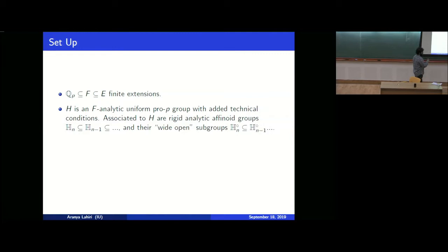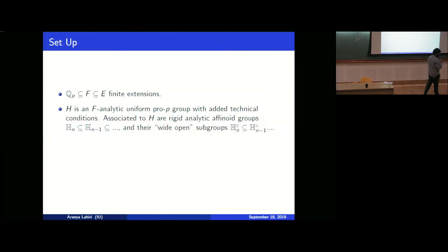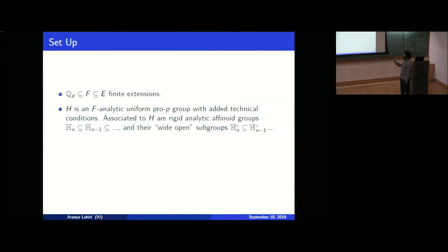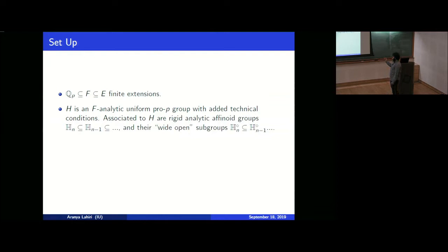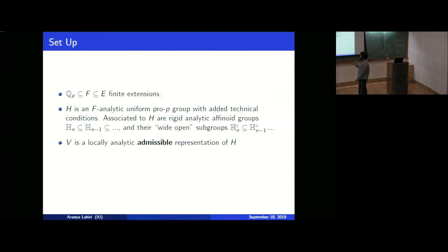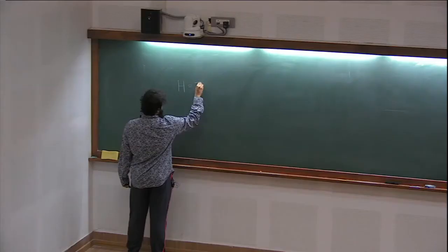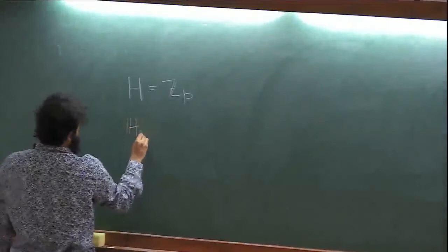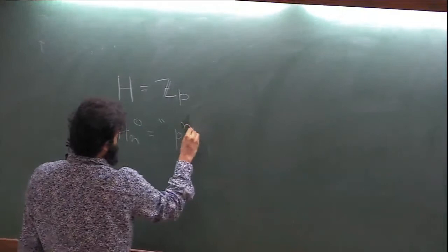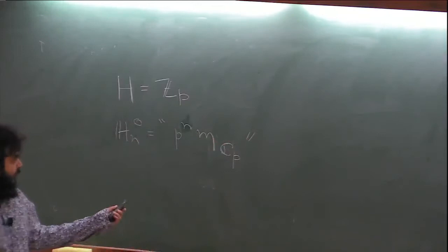If you have such an F-analytic uniform pro-p group H, you can canonically associate to H a nested sequence of rigid analytic affinoid subgroups. With these subgroups we have the wide open subgroups, which I denote by H_{n,0}. These are going to play an important role. As a very basic example, we can think of H as Z_p, and this H_{n,0} as p^n times the maximal ideal of O_{C_p}, the ring of integers of C_p.